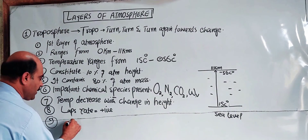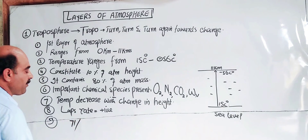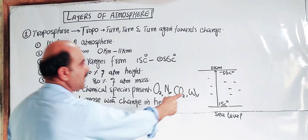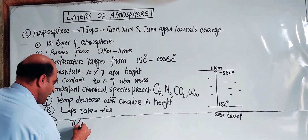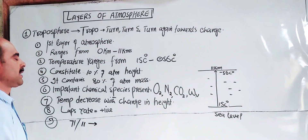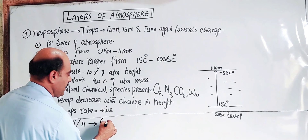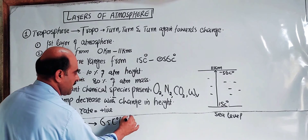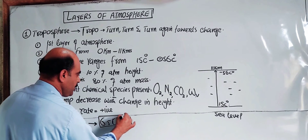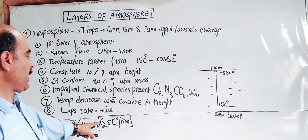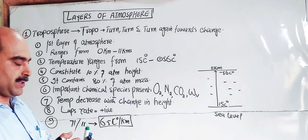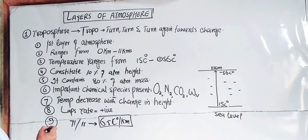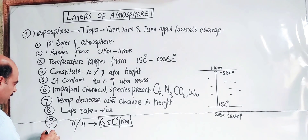The total temperature change from 15°C to minus 56°C is about 71 degrees Celsius over 11 km. Dividing 71 by 11 gives approximately 6.5 degrees Celsius per kilometer. So for every 1 km increase in altitude, the temperature decreases by 6.5°C. This is also the area of much turbulence.